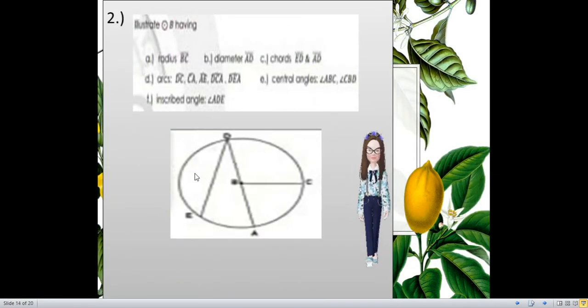Okay, next, illustrate circle B. Illustrate, it means, we're going to draw what is being asked. So, illustrate circle B having radius BC. So, if I draw, this should be my circle B. I will point the point B. Then, I ask radius BC. So, I should put the C there, on the circle. So, I now have the radius BC.